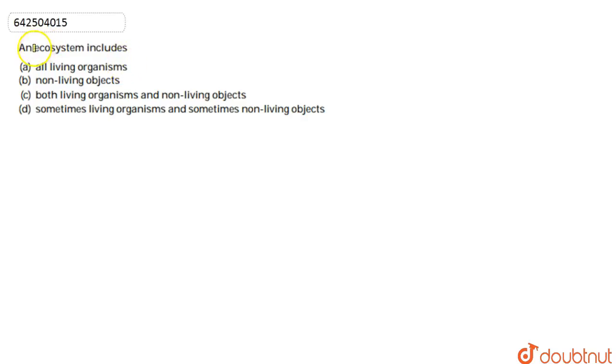In this question, we are asked what an ecosystem includes. So if we first talk about what an ecosystem is - an ecosystem is any geographic area that basically includes two main components: the abiotic component...